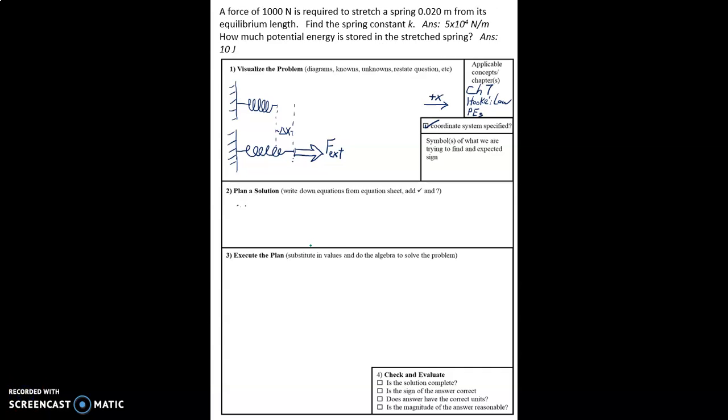In this problem, a force of 1,000 newtons is required to stretch a spring 0.020 meters from its equilibrium length. Here's a spring that is at equilibrium, just at rest sitting there. And then we apply a force of 1,000 newtons, and that causes this delta x. The spring got longer by this much, and that's 0.020 meters. And it's stretched to the right,